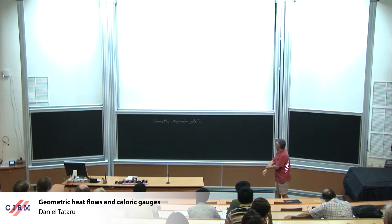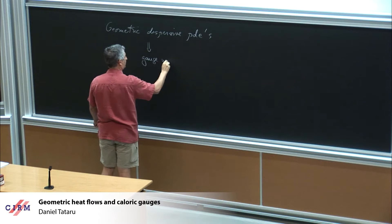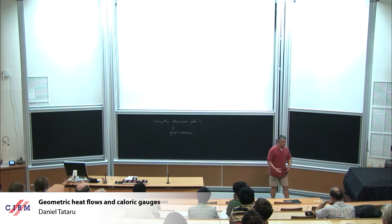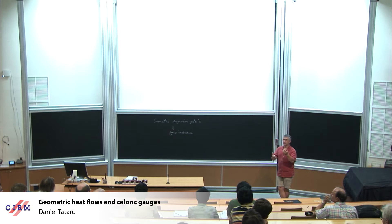I'll tell you more about what equations I have in mind, but for now let me just say that one feature that all of these geometric dispersive PDEs share is some gauge invariance. In other words, for each of these equations, you have some gauge group, and this gauge group means that you have an extra family of symmetries that applies to your equation. When you look at the solution, you don't think of that as a single solution, you think of it more as an equivalence class.